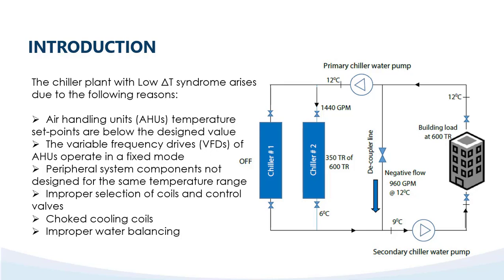What are the problems? Why is this plant behaving like this? The chiller plant with low delta T syndrome arises due to the following reasons. Point number 1: AHU temperature set points are below the designed value. Now here we want 6 degree supply, but if our AHU set point is kept at 12 or 10 degrees, it is never achieved. So we have to keep the digital thermostat at 24 plus or minus.